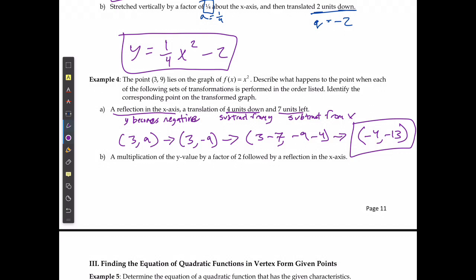For the second one, I start at the same point, 3 and 9. It says it wants us to multiply y by a factor of 2. So I'm going to say that it's going to be 3 and 2 times 9, which would be 3 and 18.